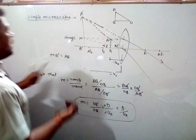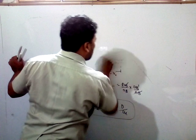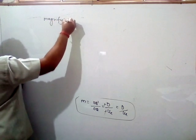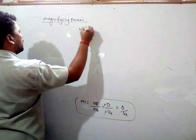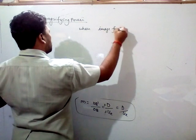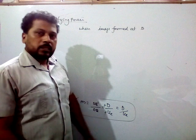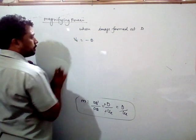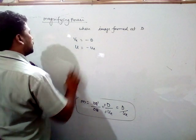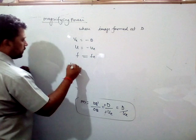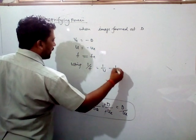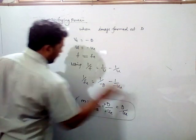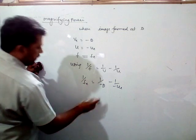When the image forms at the least distance of distinct vision D, then V equals minus D and U equals U_E, with focal length F_E. Using the lens formula 1/F equals 1/V minus 1/U, and substituting: 1/F_E equals 1/(minus D) minus 1/(minus U_E).